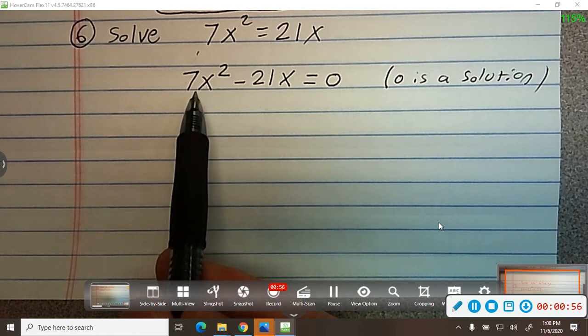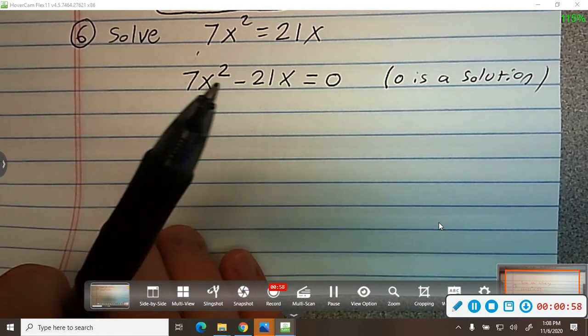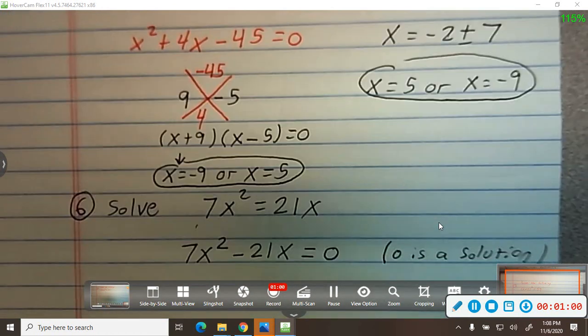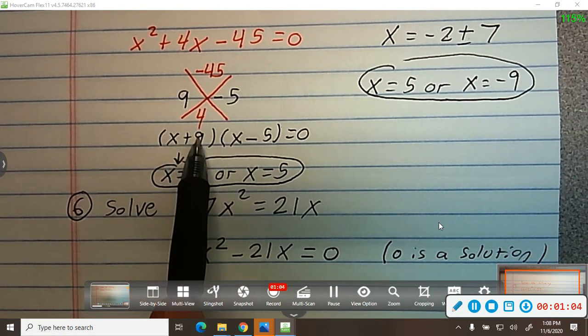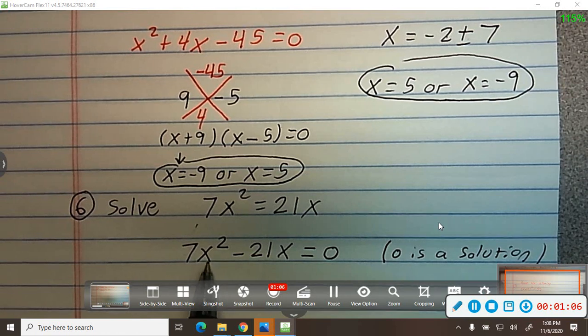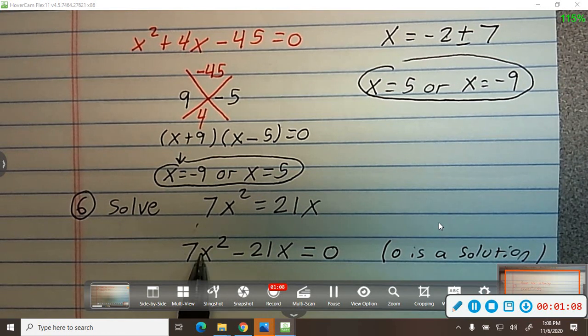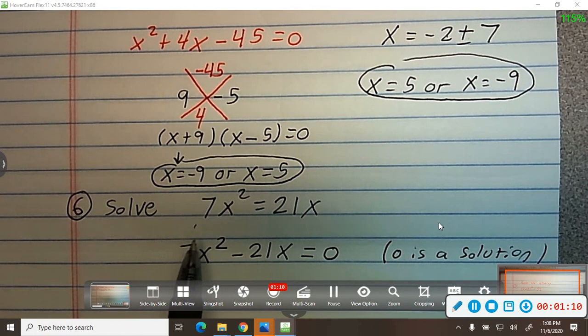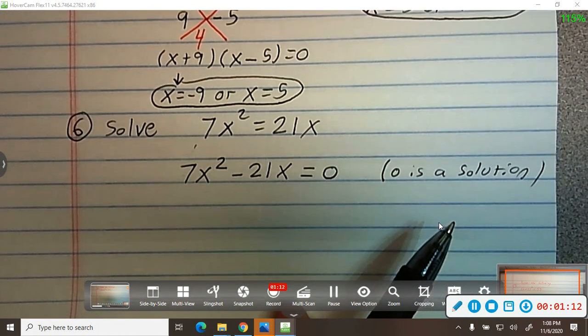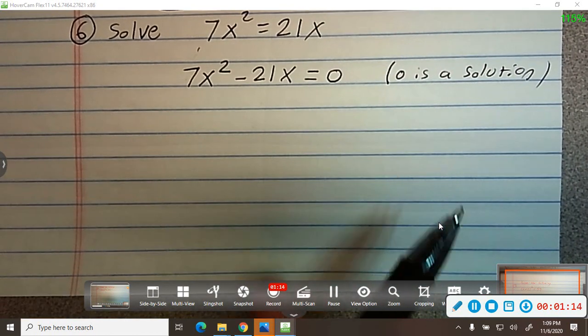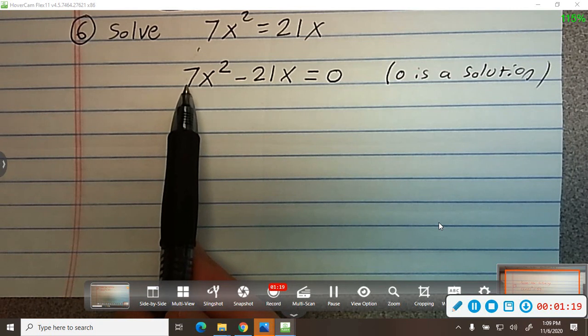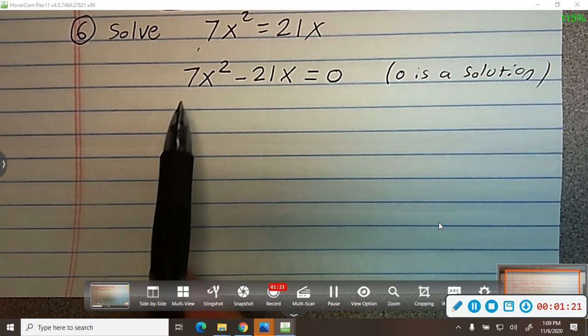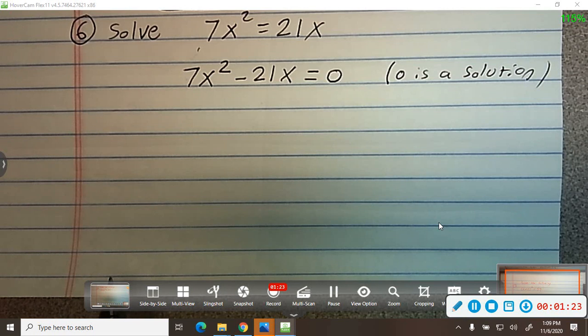So from there, you might be tempted to go like what we just did on this problem and jump to this and put negative 45 and 4. But notice ours only has two terms. You cannot do this process when there's two terms. So when there's two terms, that means either difference of two squares, but 7 is not a square because that'd be a rectangle, 7 times 1. So it could be it doesn't factor or it could be GCF.